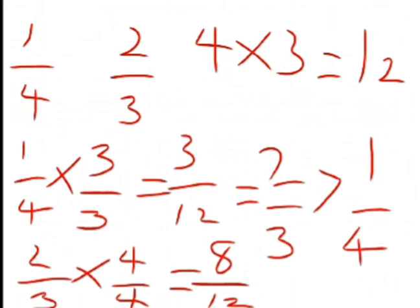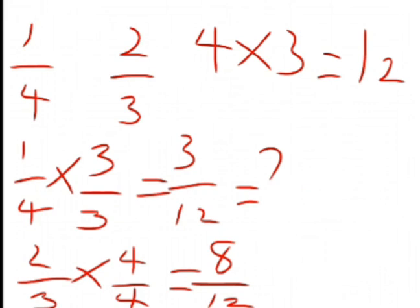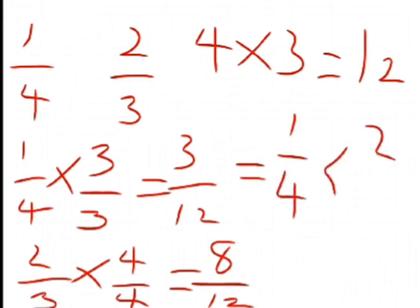We have compared the fractions and this is our verdict: two over three is greater than one over four. If you don't want to use the greater-than symbol, you can say one over four is less than two over three. Both expressions mean the same thing.